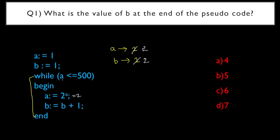Again, condition checking happens: a is less than or equal to 500. This is true because 2 is less than or equal to 500. So a := 2 power a, which is 2 power 2 = 4. So a becomes 4. Then b increments: b value becomes 3.